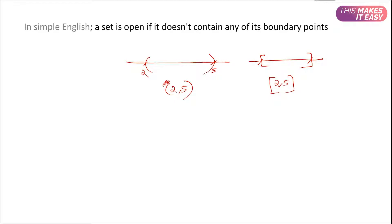This open set includes all the points between 2 and 5 but not 2 and 5 themselves. The closed set includes all points between 2 and 5 including 2 and 5. The open set will include 4.9999 but not 5, and it will include 2.00001 but not 2. So a set is called open if it doesn't contain any of its boundary points. This is in one dimension.